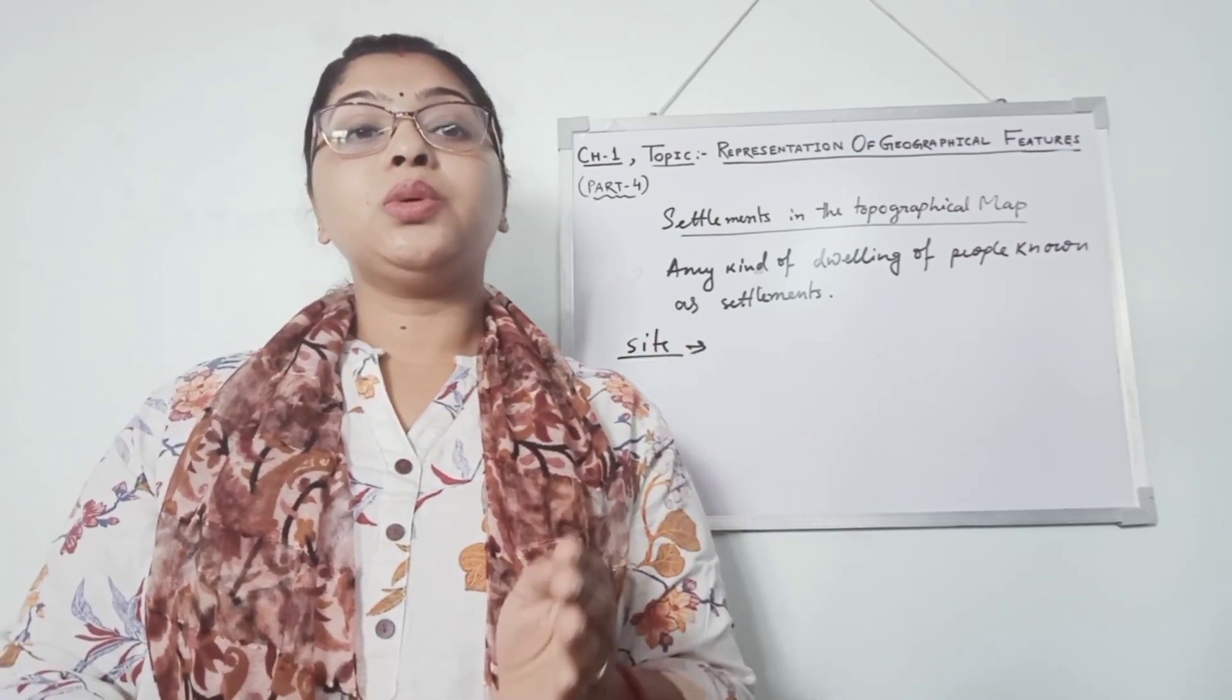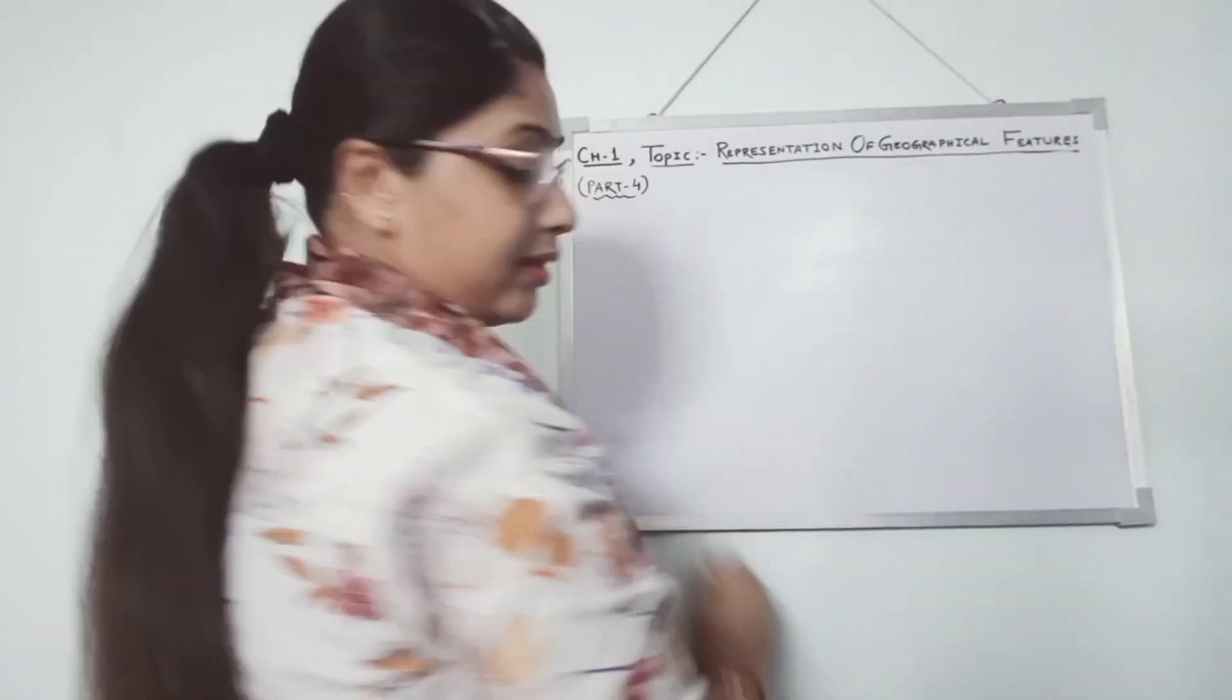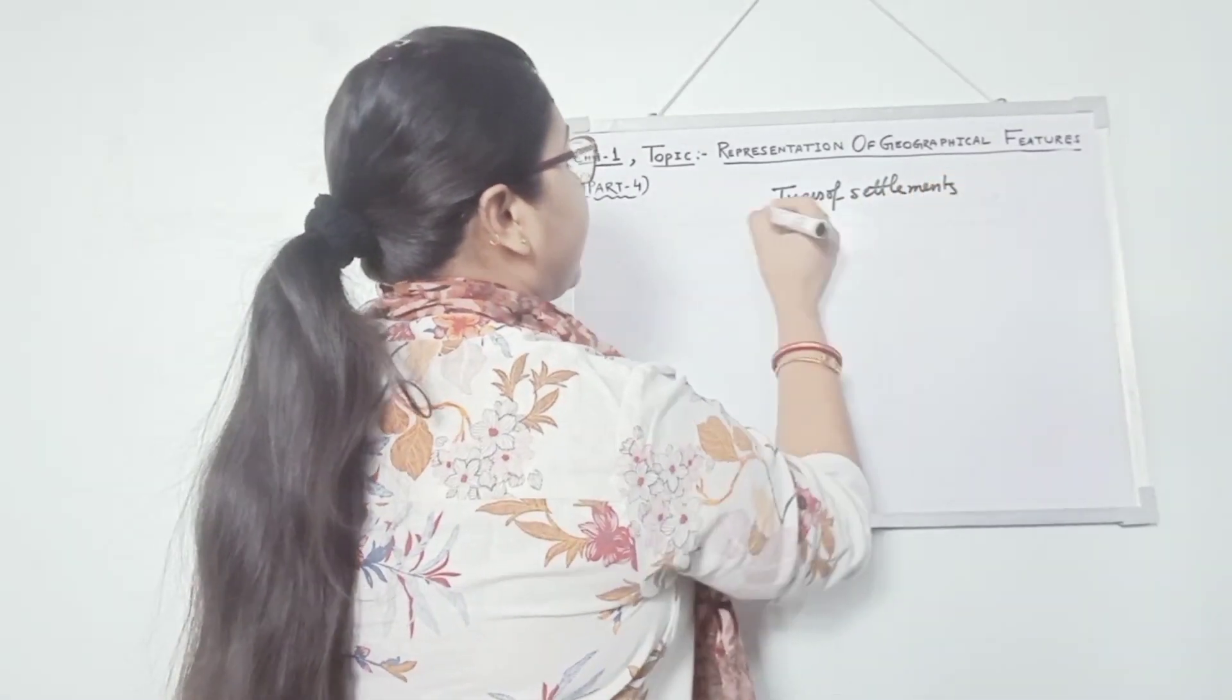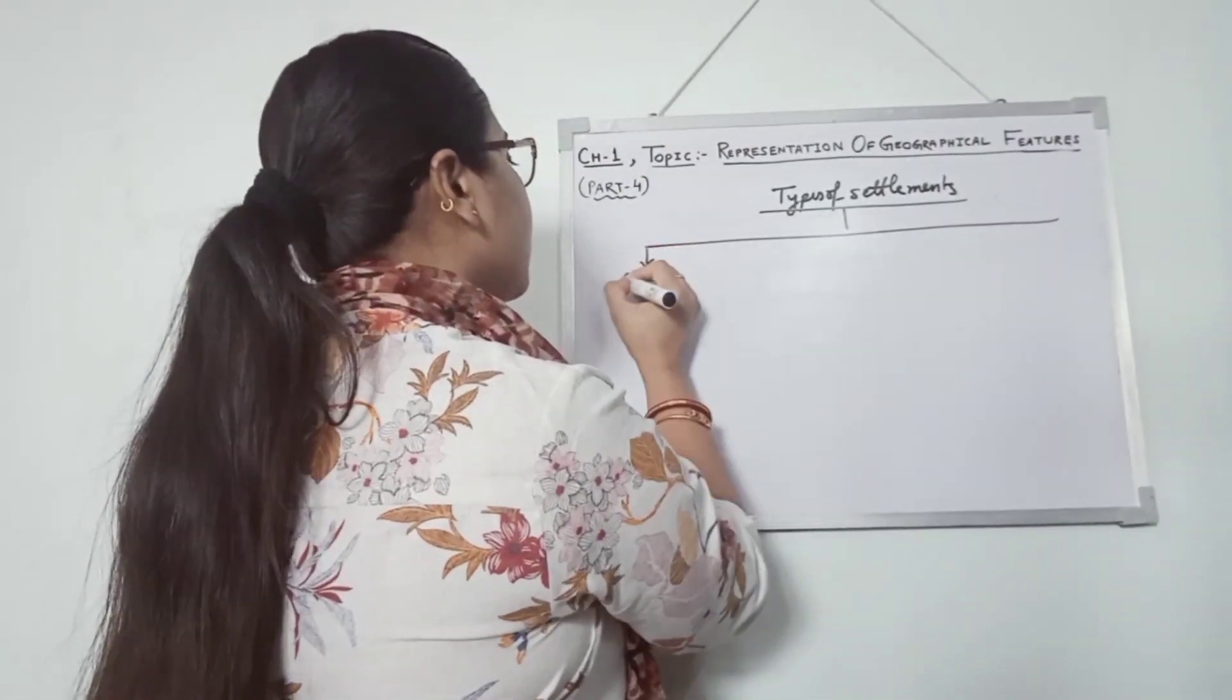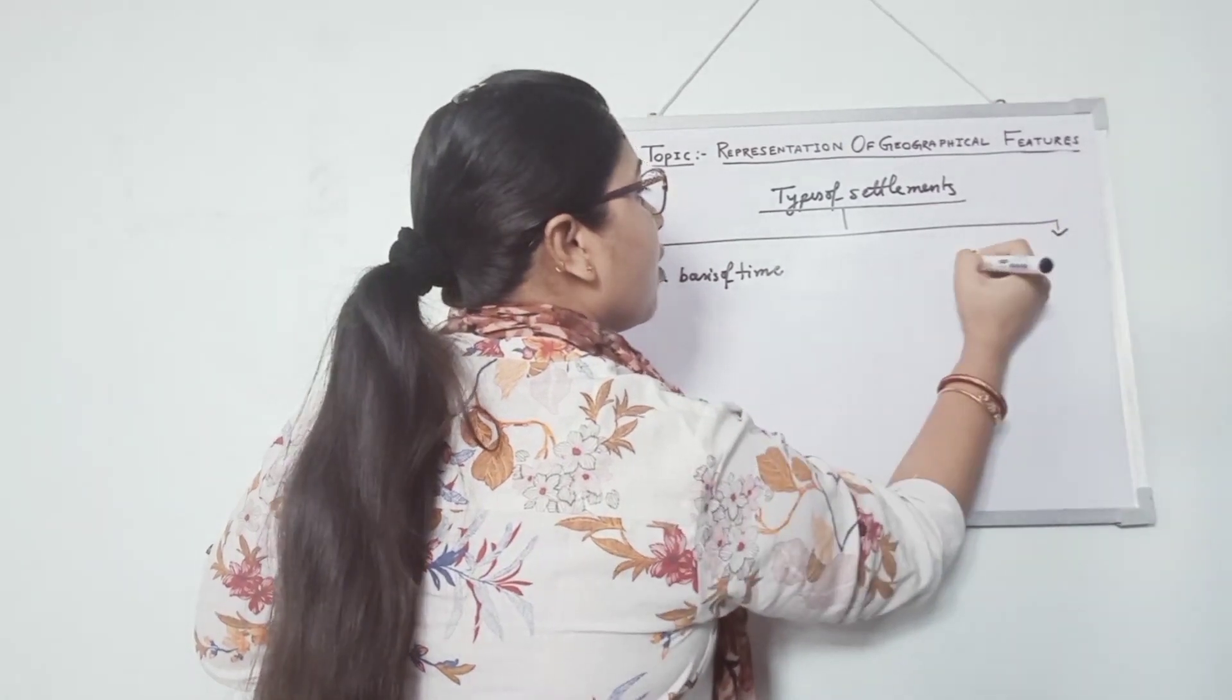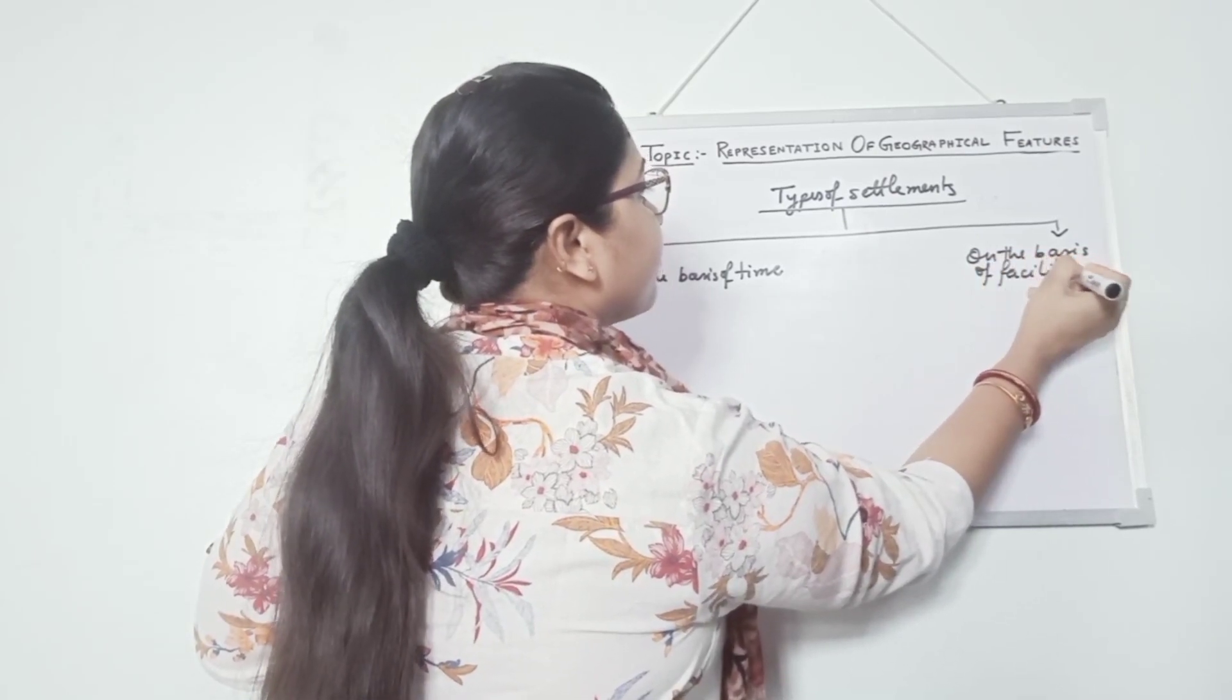So now we will get to know what are the different types of settlements are there. First, I am making the flowchart to show you. Types of settlements. It can be made two times. First is on the basis of time. Another is on the basis of facilities.